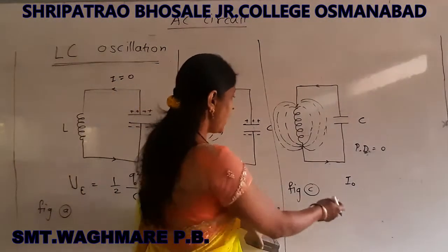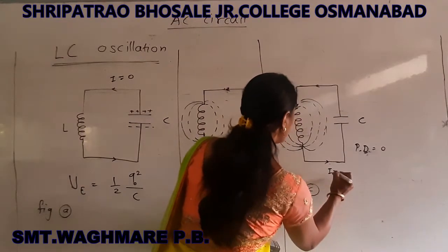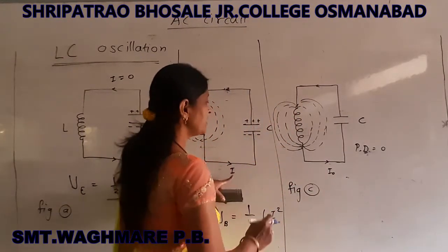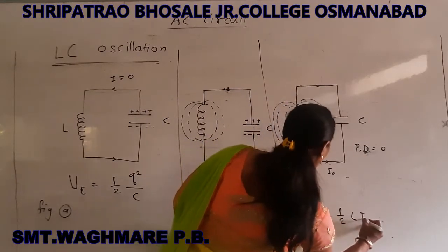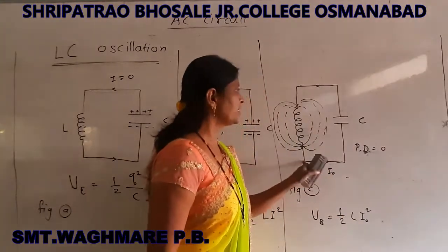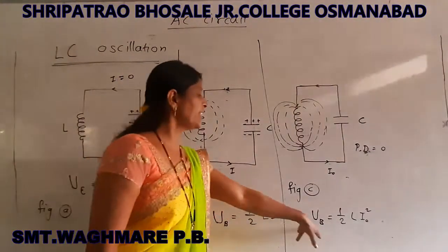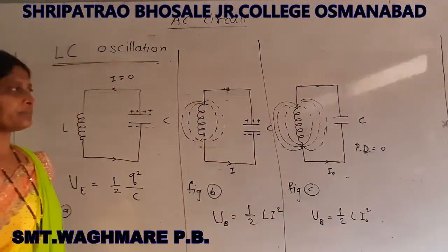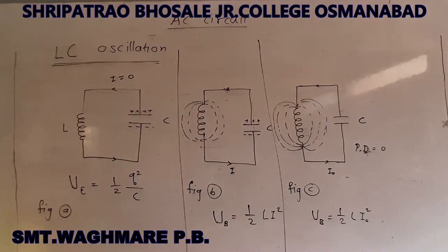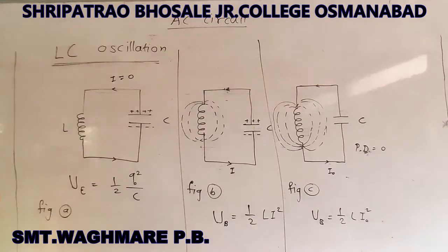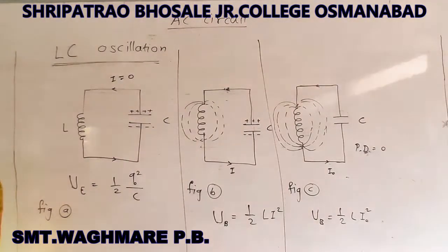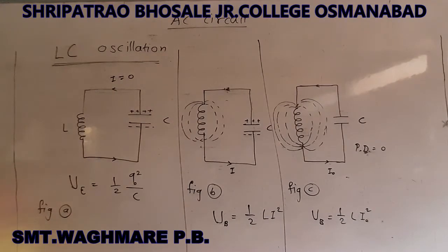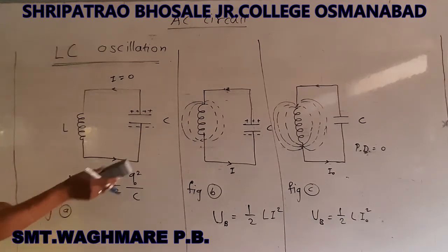Here I is the instantaneous current, and in this case I is the maximum current. So the magnetic field energy U = (1/2) L I₀². Then, after the discharge of the capacitor is complete, the magnetic flux linked with the inductor decreases, inducing a current in the same direction as earlier. The current persists but the capacitor begins to charge in the opposite direction.